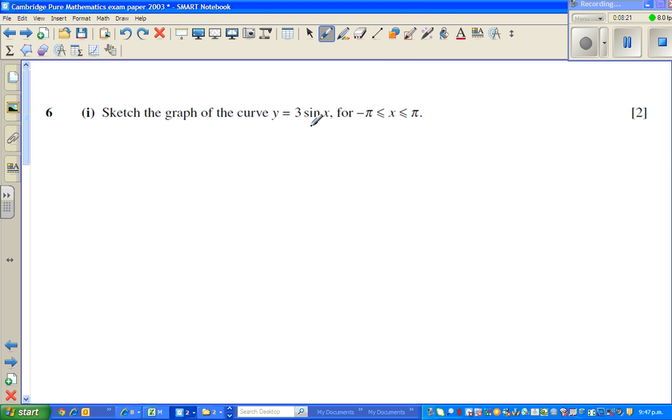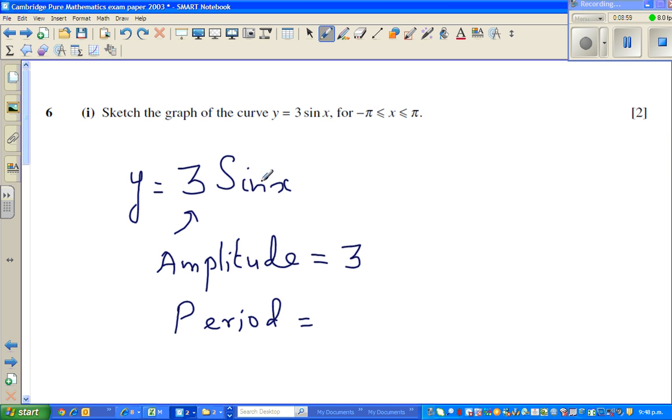Let us look at the next question. Sketch the graph of y is equal to 3 sin x for the interval negative pi to pi. Now this 3, let me write the equation y is equal to 3 sin x. Now this 3 tells me the amplitude. This is the amplitude. And the coefficient of x is 1, so the amplitude is 3 here, and the period of the sine curve here, it has the coefficient of x is 1.